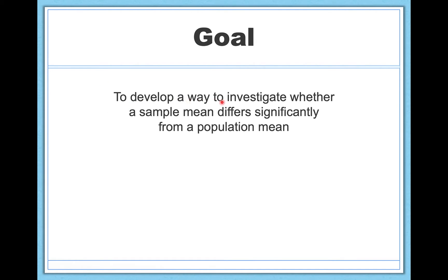So our goal here is to develop a way to investigate whether a sample mean, x-bar, differs significantly from a population mean, mu. And this is a question we're often interested in answering. Does this average that I'm looking at among this particular group of people, maybe college students or people who took a certain medication or people who had one treatment or another, is that average significantly different than the population average in general?